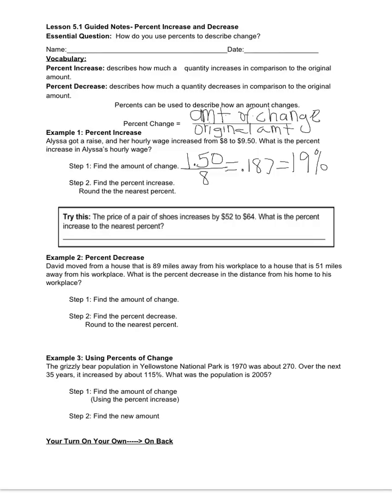Now what I'd like you to do is try this problem right here, and then we will go through this together. The price of a pair of shoes increases by $52 to $64. What is the percent increase to the nearest percent?